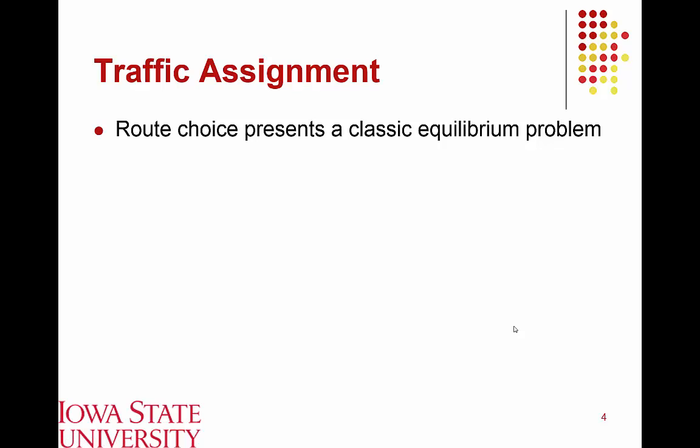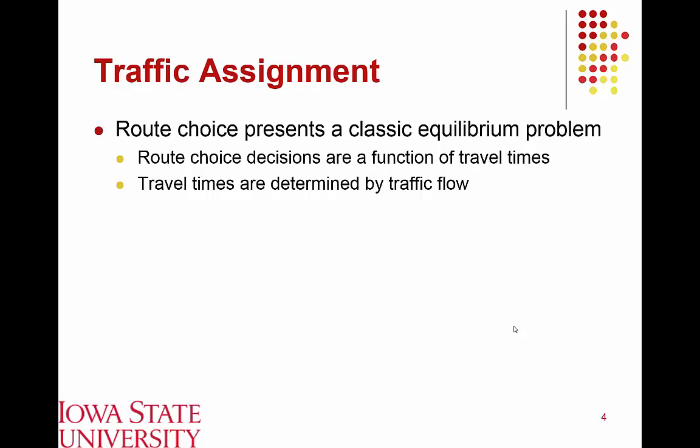Traffic assignment and route choice behavior essentially present a classic equilibrium problem. Route choice decisions are a function of travel time — as travel time goes up, a route becomes less desirable. This is complicated by the fact that travel times are a function of traffic flow or volume. Consequently, traffic flow is a byproduct of route choice decisions, making it difficult to disentangle whether people are using a route because it has a lower travel time, or whether it has a lower travel time because of the number of persons using that route.